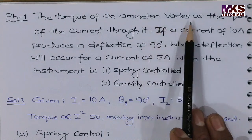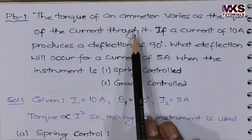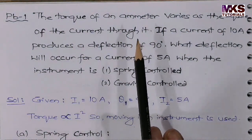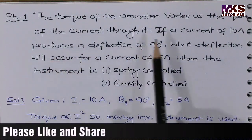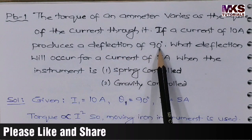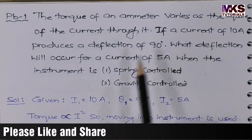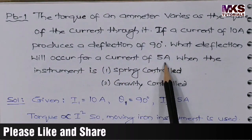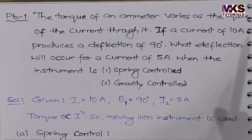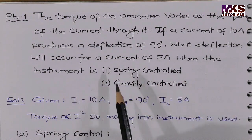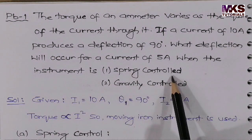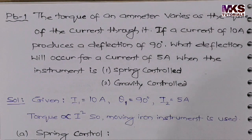The torque of a moving iron instrument varies as the square of the current through it. The controlling torque is given. If a current of 10A produces a deflection of 90 degrees, what deflection will occur for a current of 5A? If 10A current gives 90 degrees deflection, and the instrument is spring controlled — there are two methods: spring control and gravity control.